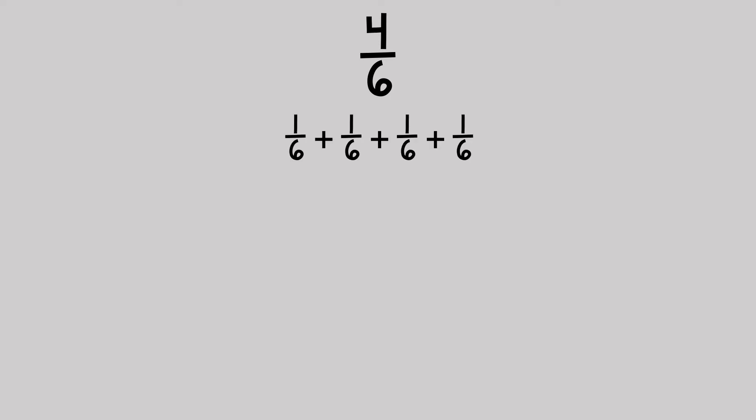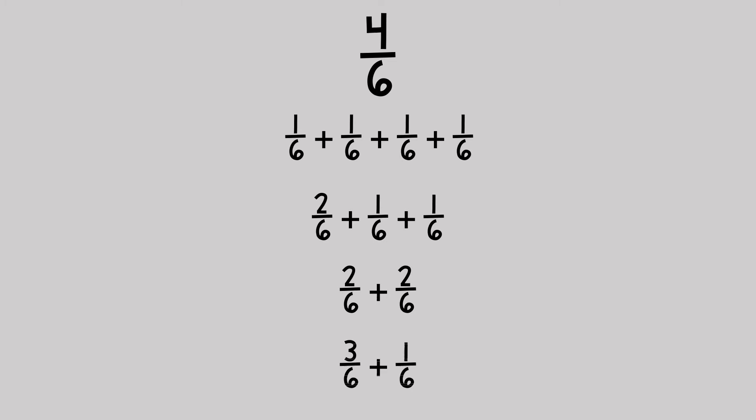Fractions can also be decomposed. Let's take the fraction four-sixths for example. The six is considered the whole and four is the number of pieces in the whole. We could decompose four-sixths as one-sixth plus one-sixth plus one-sixth plus one-sixth. We could also decompose it as two-sixths plus one-sixth plus one-sixth, or two-sixths plus two-sixths.